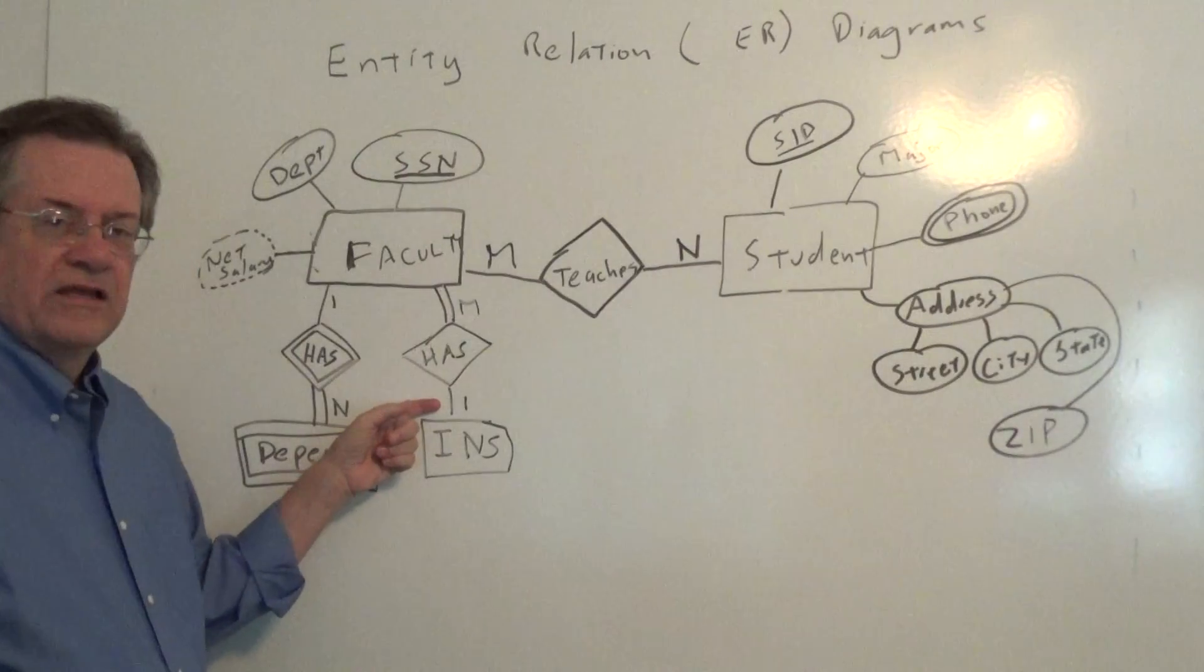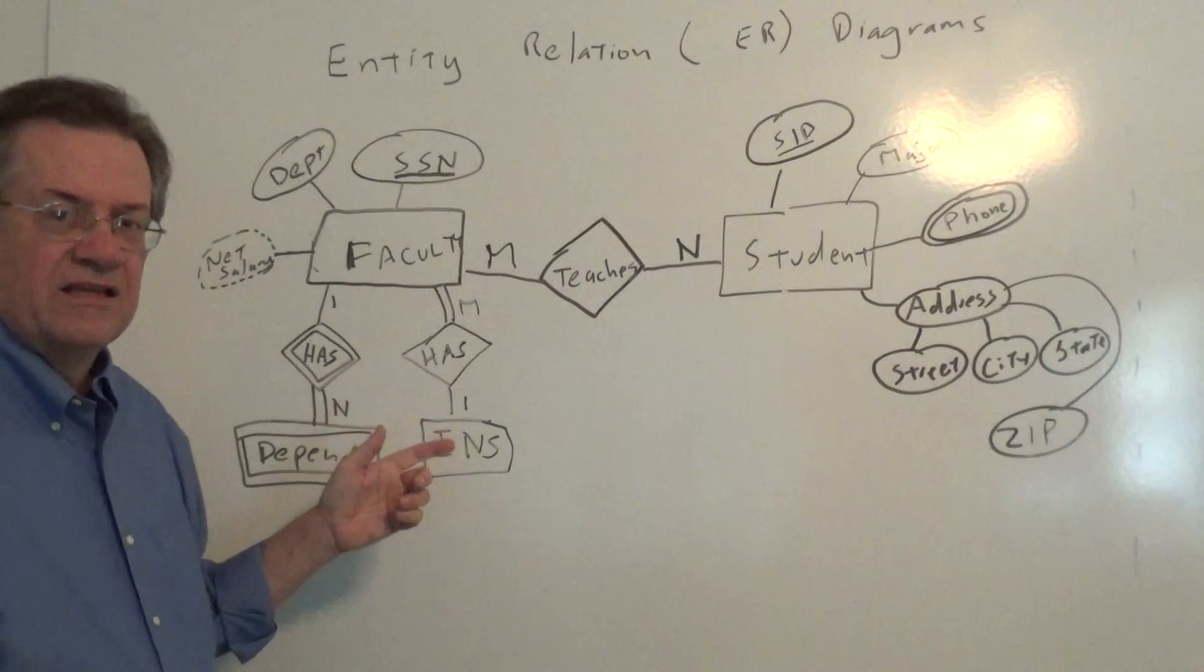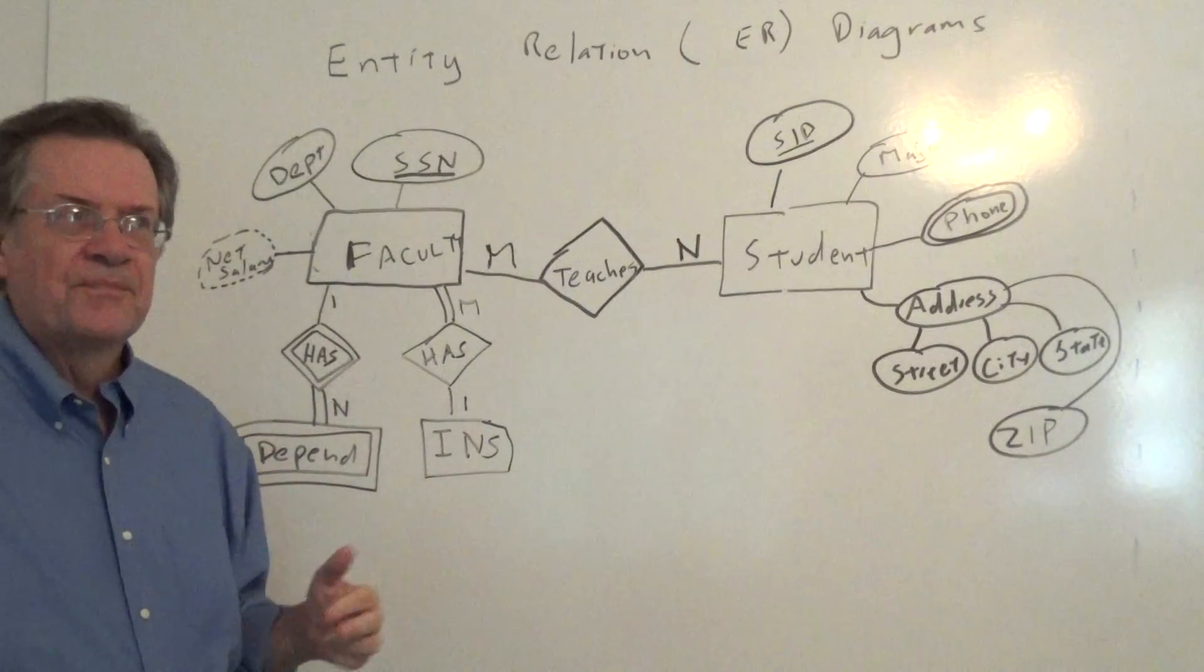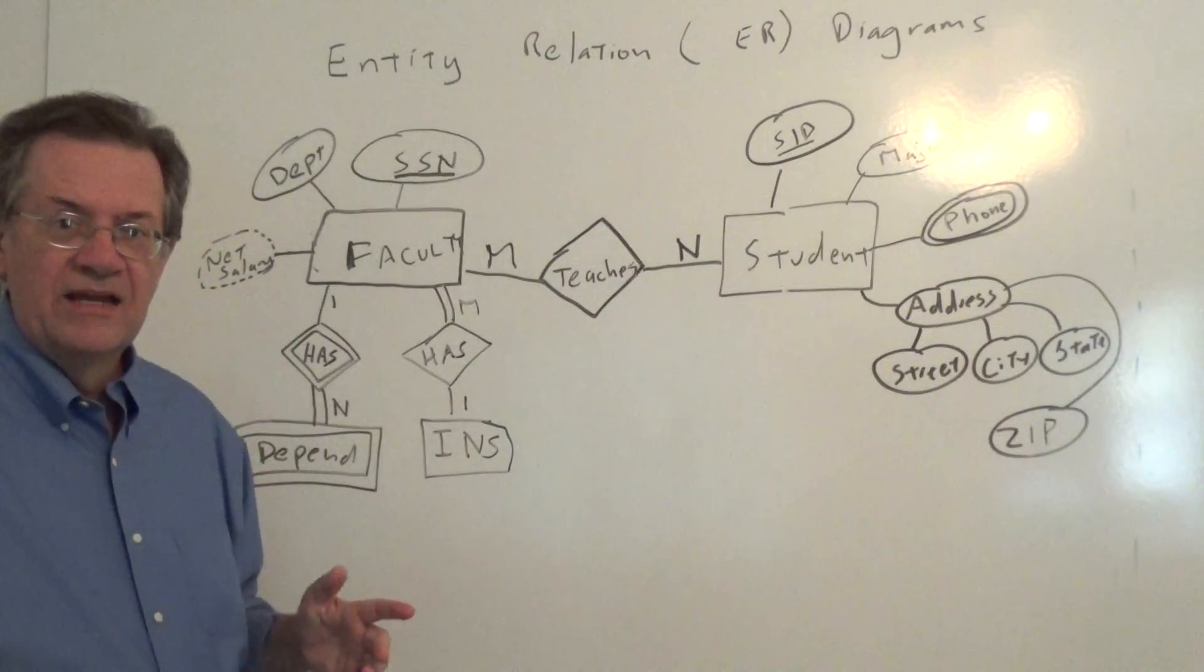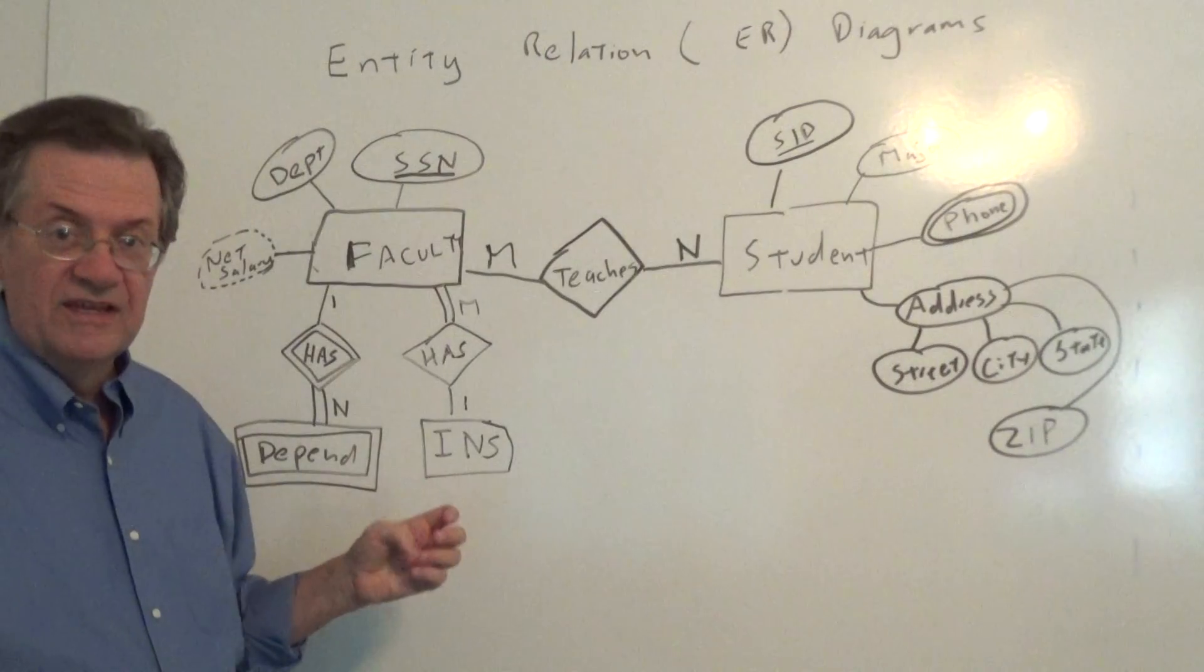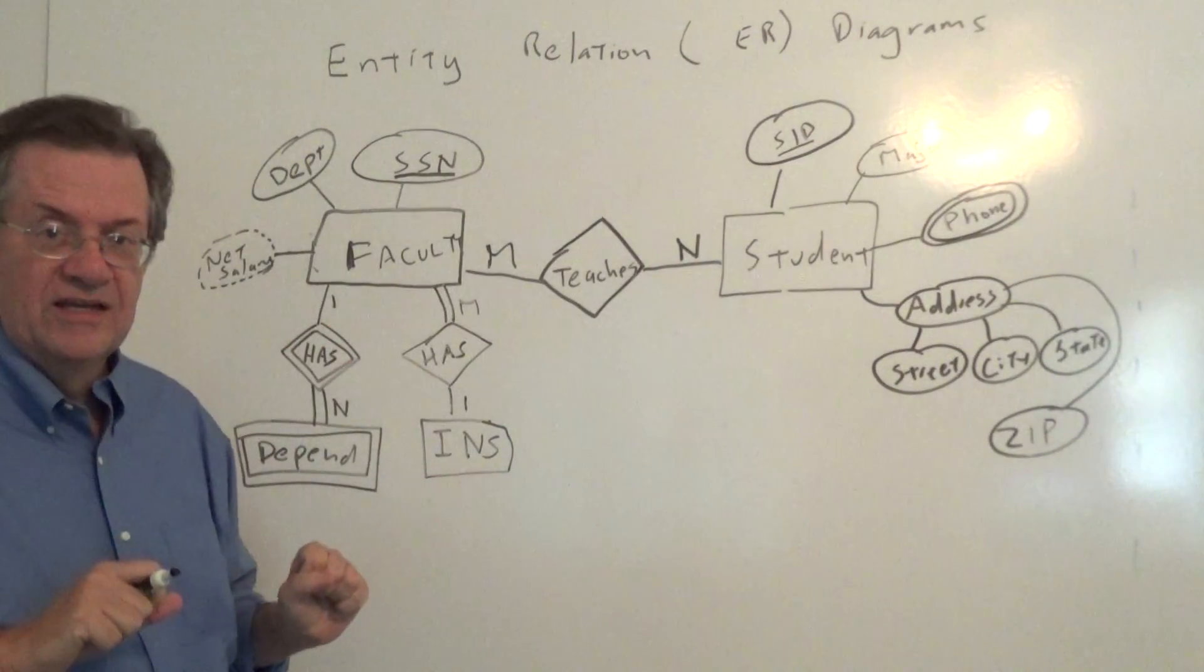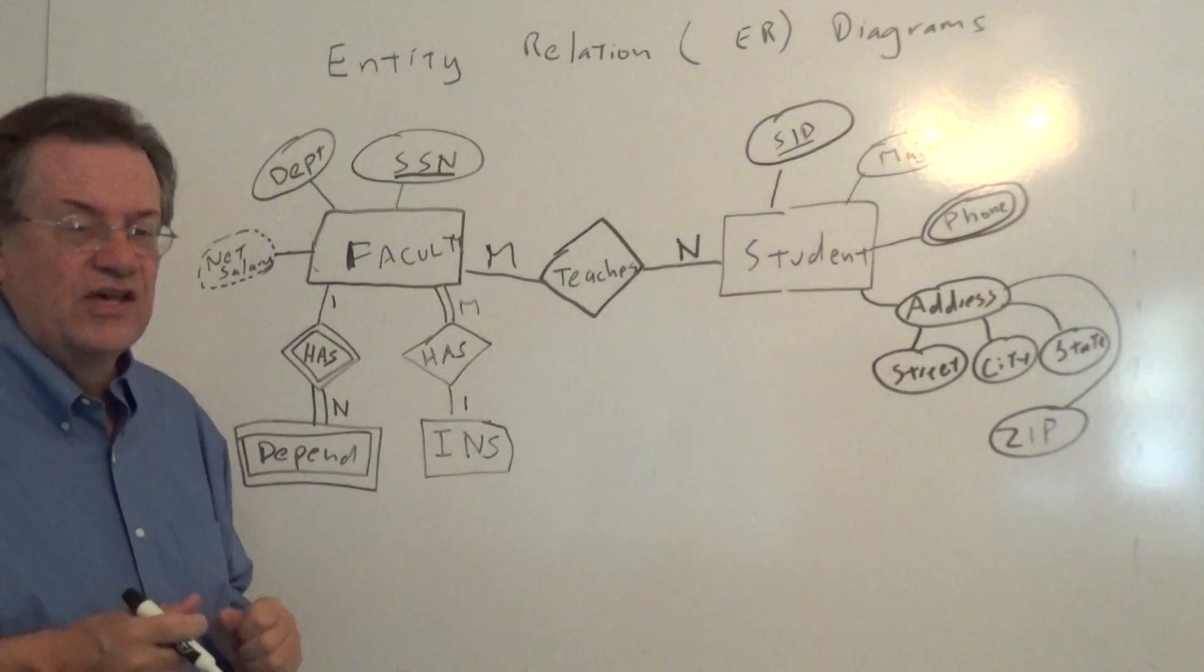Now it's not total participation here, because let's say a company gives the option of Blue Cross, Aetna, Health Select for example, and if you have 50 faculty, they might not choose at least one of the options. So 25 might go Blue Cross, 25 go Aetna, nobody chooses Health Select, so it's not total participation on this side there.